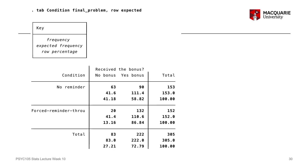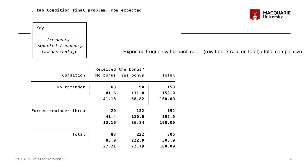Moving on to our contingency table — our two-way frequency table — just like we saw a couple of slides ago, we can get Stata to give us the row percentages, and we can also get Stata to give us the expected values. The expected frequency is what we would expect to see if there was no association between the variables, if the two variables were independent. The calculation for the expected frequency for each individual cell is the row total multiplied by the column total divided by the total sample size. Let's pick the expected frequency for the forced reminder through association group for the yes bonus outcome.